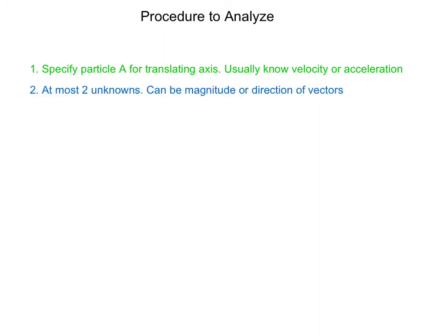So now I'm going to give you a general procedure to analyze these type of equations. When you're given two particles moving relative to each other, first you want to specify particle A for the translating axis, usually known velocity or acceleration of A. So if you know the velocity or acceleration of A, you want to specify that particle as that. And secondly, there can be at most two unknowns, and the unknowns can be the magnitude or the direction of the vectors. And lastly, you can solve these graphically by using trigonometry or by using rectangular components.